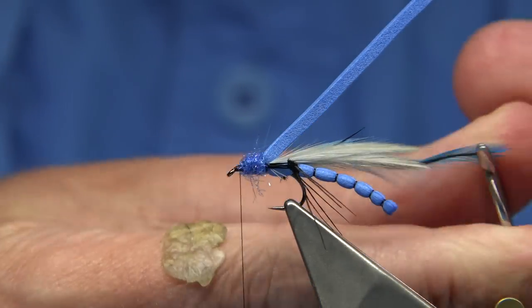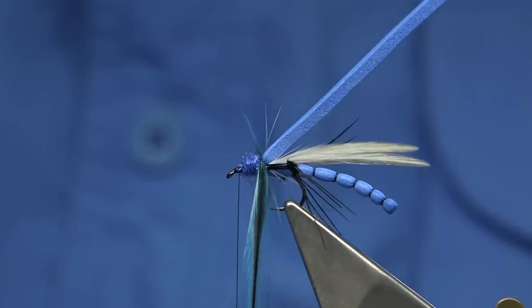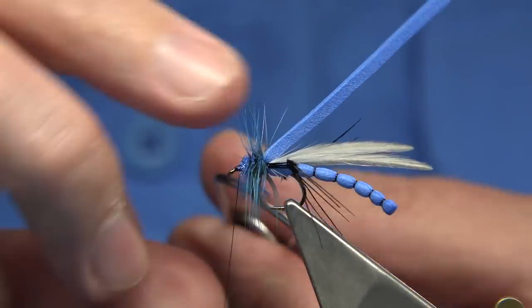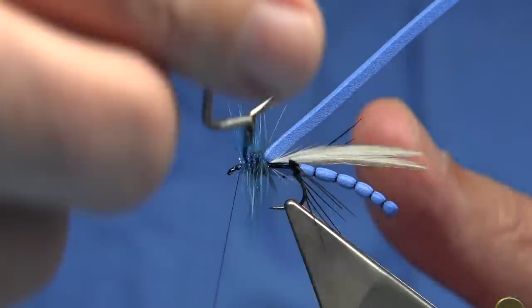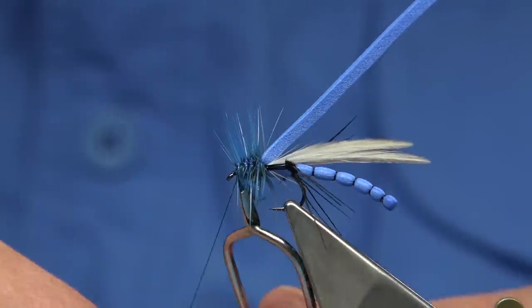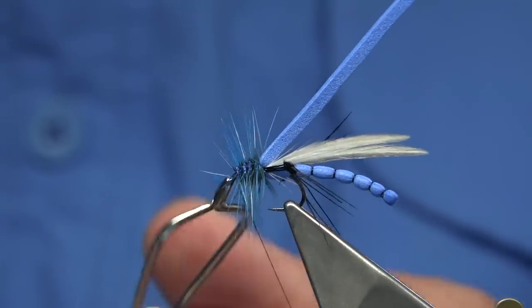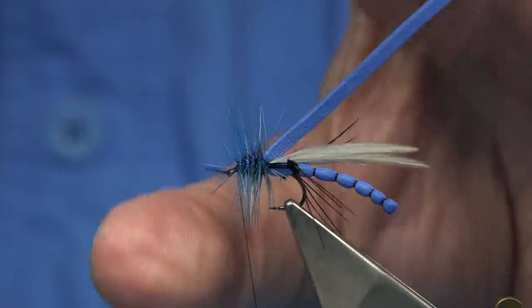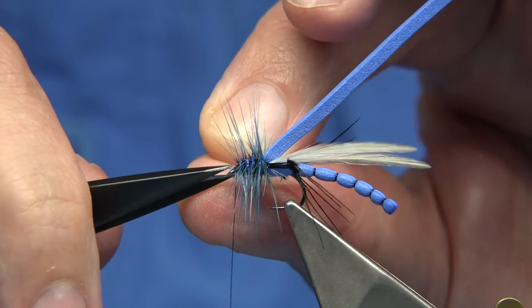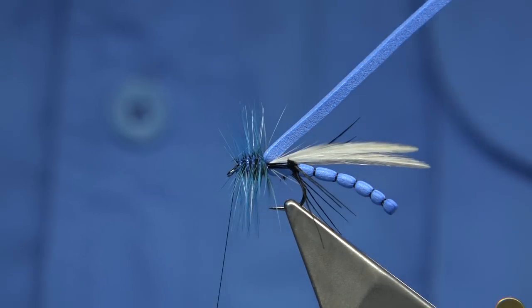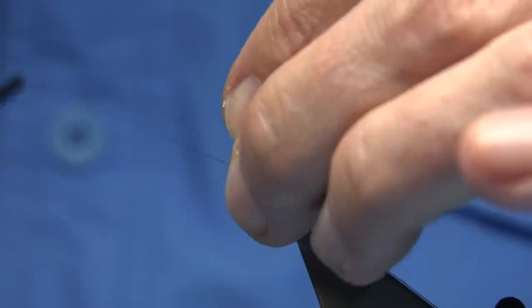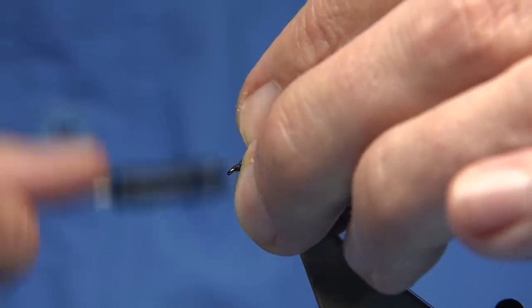I'm just going to wind the hackle through the dubbing. Obviously this is going to help float the fly. The length could be as long as short as you like. Just using up the hackle. Tie off at the front. Trim this away.